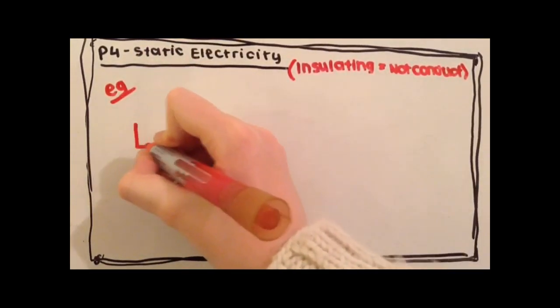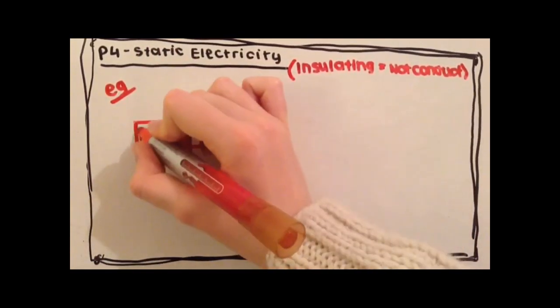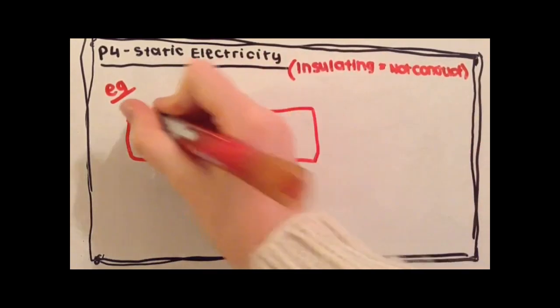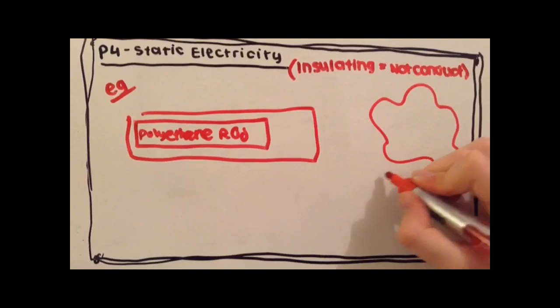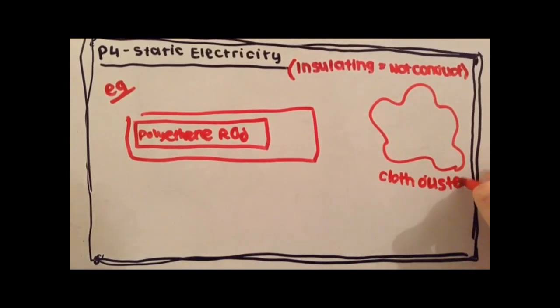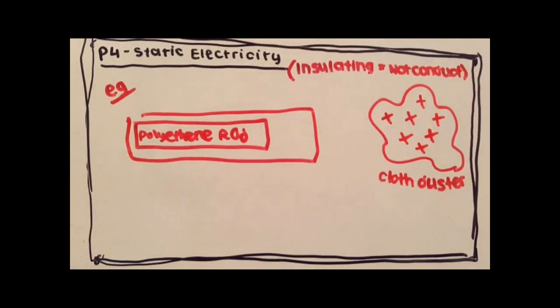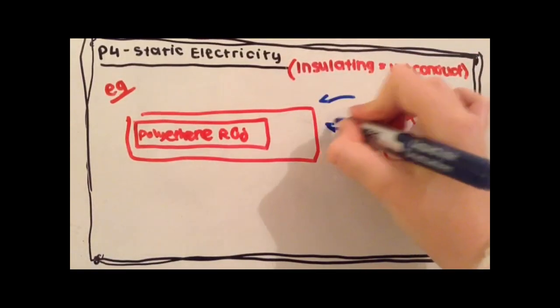When two insulating materials, materials that can't conduct, are rubbed together, electrons will be scraped off one and dumped on the other. This will leave a positive static charge on one of them due to the lack of electrons, as it has lost electrons and so now leaves it positively charged.